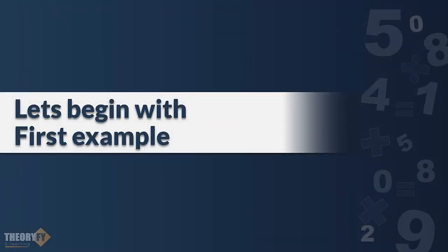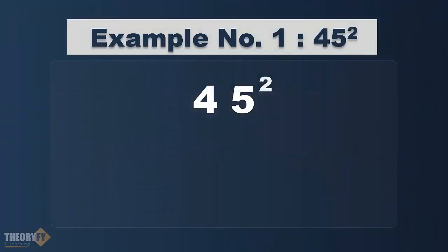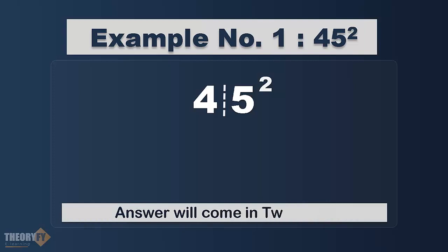Let's begin with our first example: 45 squared. First, what we do is we split the number and keep the 5 aside in the right part, and the other digits will go into the left part. Our answer will come in two parts — you can call them LHS and RHS.